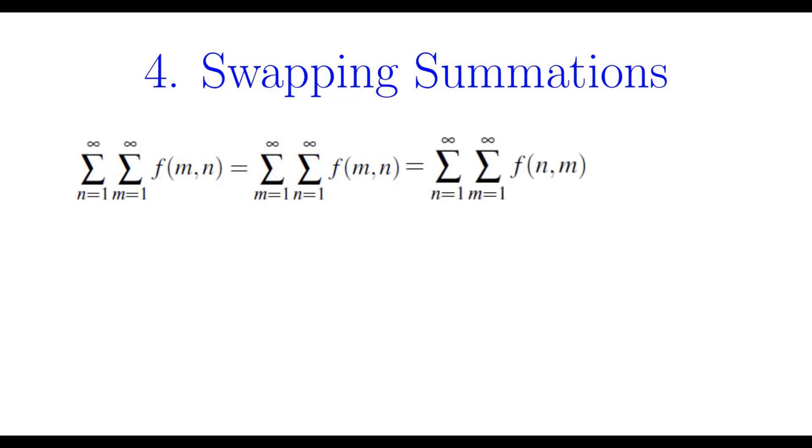Now if you change the dummy variable m and n, you would get sum n equals 1 to infinity, m equals 1 to infinity, and the function becomes f of n comma m. In other words, we didn't really change the double sum except we changed the sum from f of m comma n to f of n comma m.